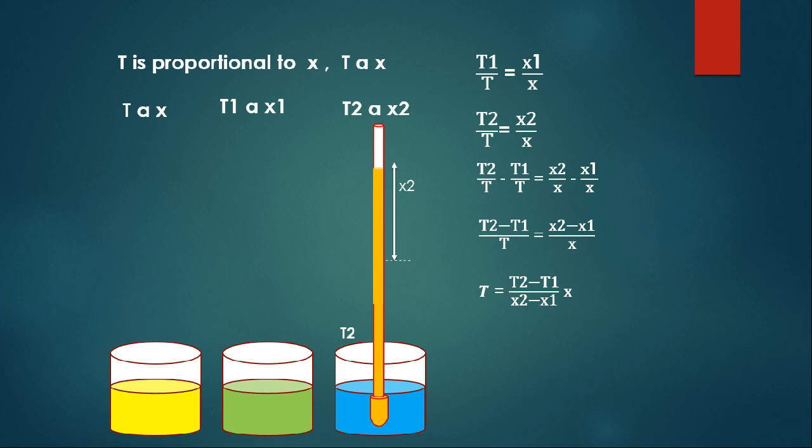X2 and X1 are the expansions of the liquid when I dip the thermometer in those reference fluids, and X is the expansion of the liquid when I dip the thermometer in the unknown fluid. If I fix T2 and T1, I can find the unknown temperature T.